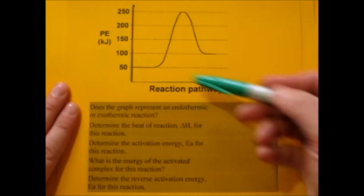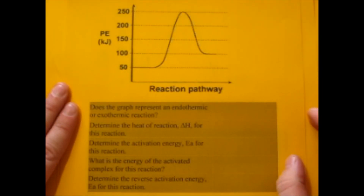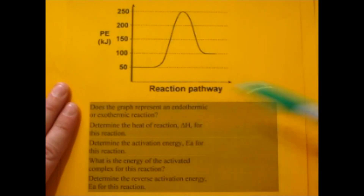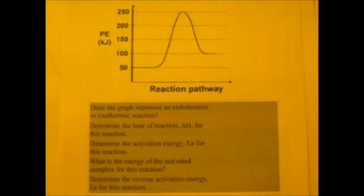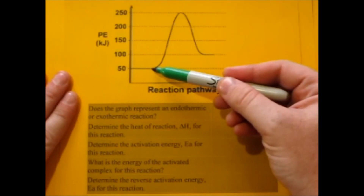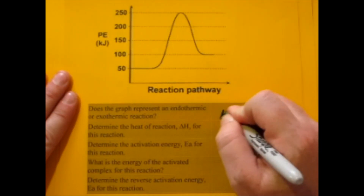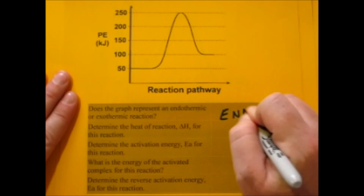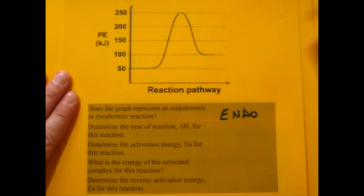The first question here — here's your potential energy diagram. Is this endo or exothermic? All you have to do is look at the shape. If you start out lower, meaning the reactants have a lower energy than the products, then that's endothermic. You can spot it just because you end up higher.